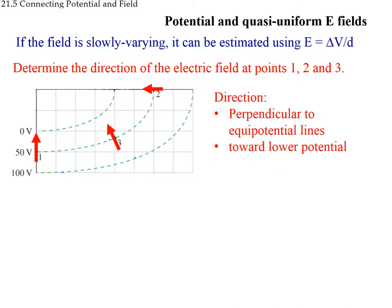The field always goes to lower values of potential and is perpendicular to the equipotential lines. At point 1, perpendicular means the field points toward zero potential. At point 2, the field is perpendicular to the local equipotential line pointing toward lower potential, and similarly at point 3.